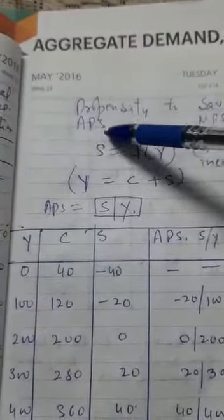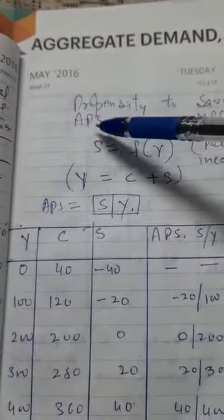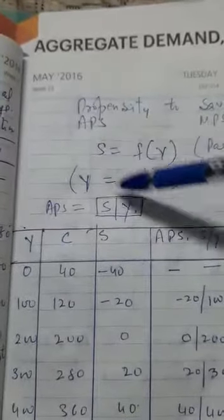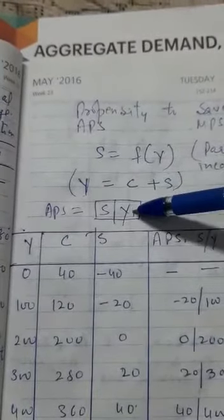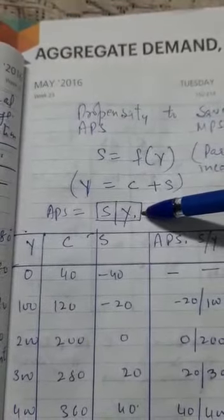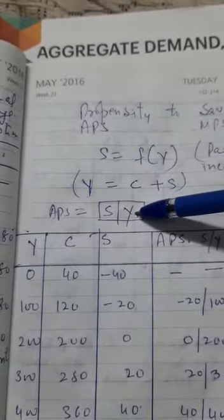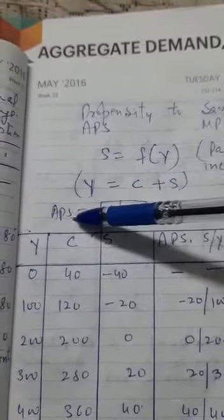Now, if we see what is average propensity to save, how do we find it? To find APS, we simply divide saving by the income. When saving is divided by income, we get average propensity to save.